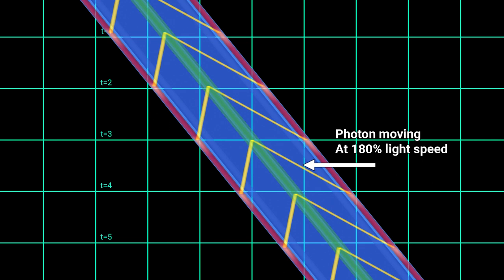In classical physics, velocities simply add up. So, this photon is moving at 180% the speed of light. And this one at 20% the speed of light.